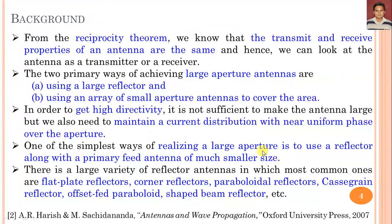In the case of a reflector antenna, we need two types of antennas: the reflector and the horn antenna as the primary feed. The categories of various types of reflector antennas include: flat plate reflector, corner reflector, paraboloid reflector, Cassegrain reflector, offset-fed paraboloid, and shaped beam reflector.